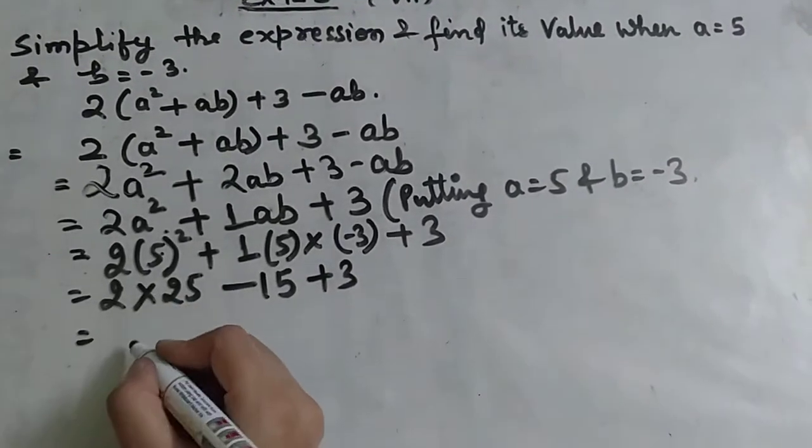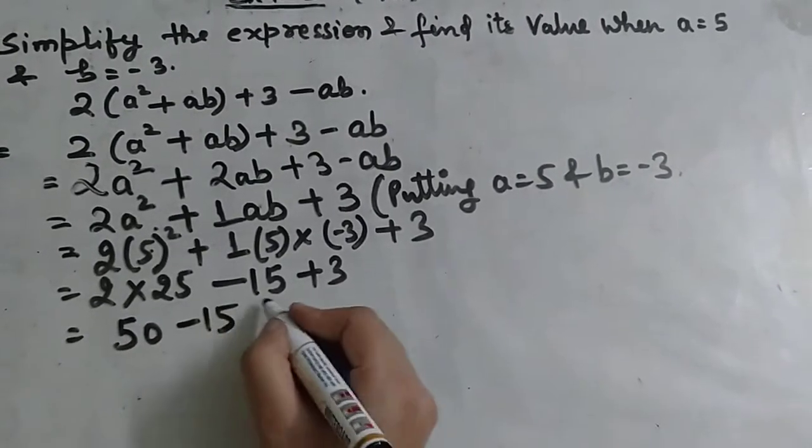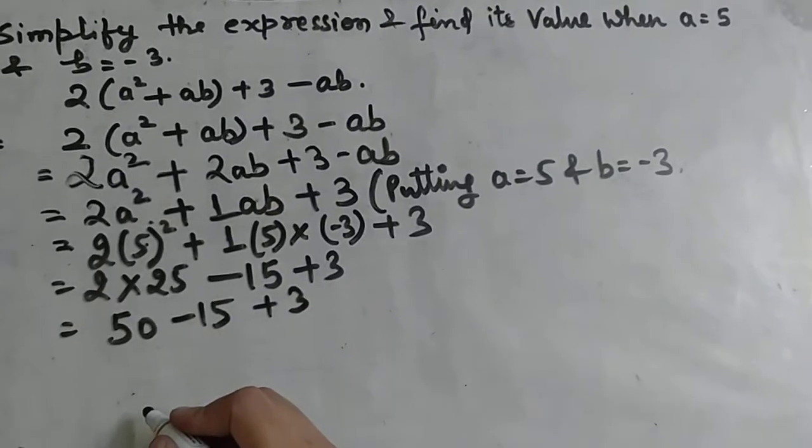We have 2 times 25, which is 50, minus 15, and plus 3.